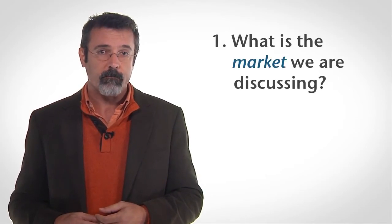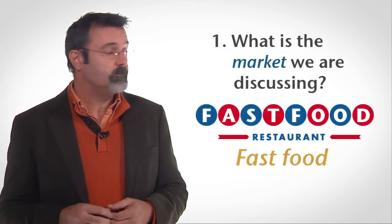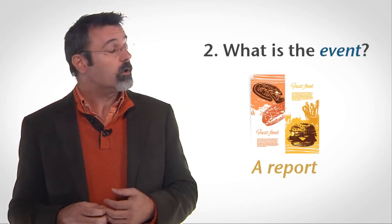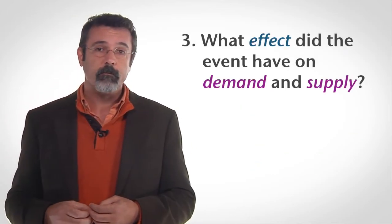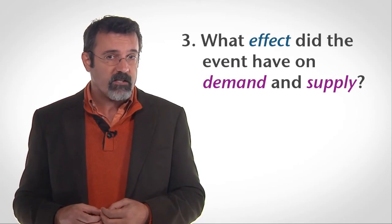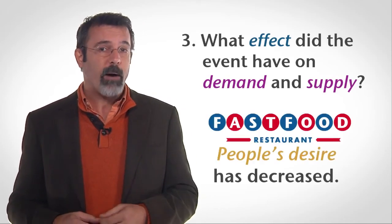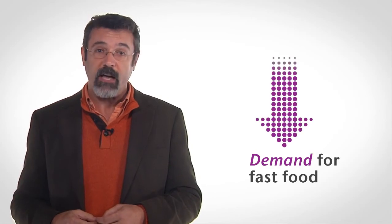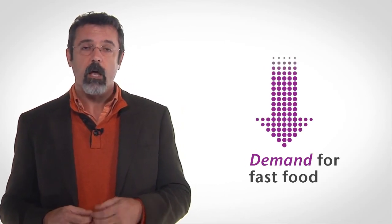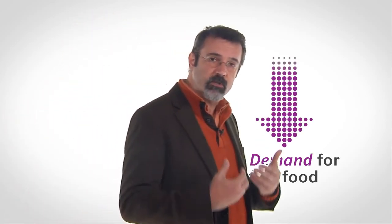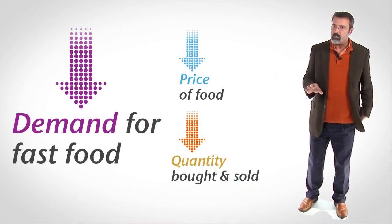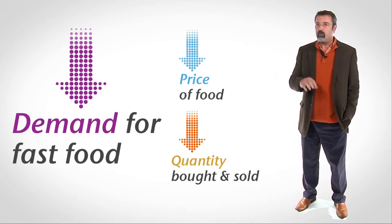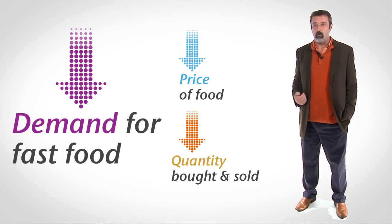Now consider the market for fast food. What happens when the government reports that avoiding fast food makes you live longer? We're discussing the market for fast food. The event is a report that you live longer when you don't eat fast food. Ignoring the price of fast food, people's desire to buy fast food has decreased. The demand for fast food has decreased. When the demand for fast food decreases, we know that the price of fast food will fall and the quantity of fast food bought and sold will also fall.